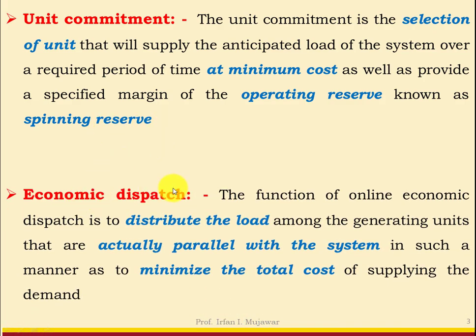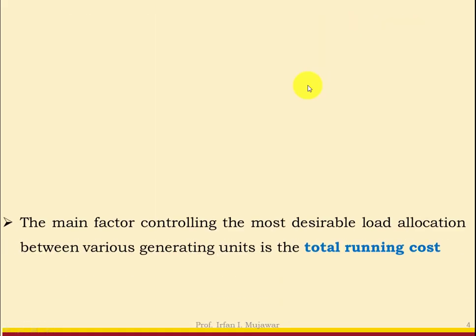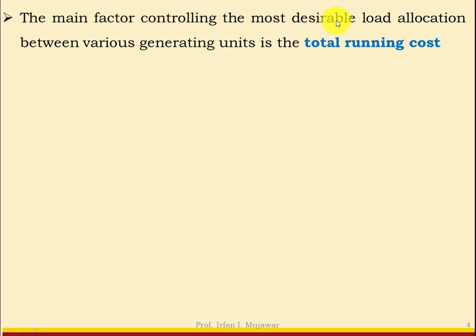The function of online economic dispatch is to distribute the load among the generating units that are actually in parallel with the system so as to minimize the total cost of supplying the demand. The main factor controlling the most desirable load allocation between various generating units is the total running cost.